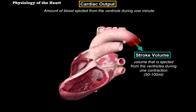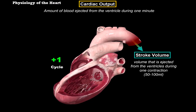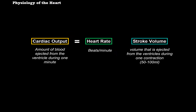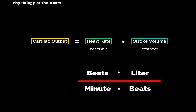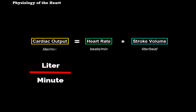Stroke volume is the amount of blood ejected from the ventricles during the ejection phase of one cardiac cycle. If you combine all the cardiac cycles within one minute, we call this the heart rate — beats per minute. So cardiac output equals heart rate multiplied by stroke volume. Heart rate is characterized as beats per minute, stroke volume as liters per beat, and when you multiply them, beats cancel out, giving you liters per minute. That's how we define cardiac output: the amount of blood, in milliliters or liters, ejected per minute.